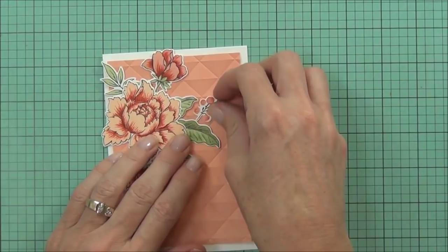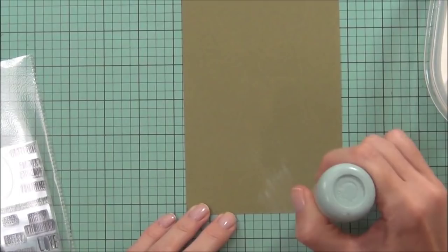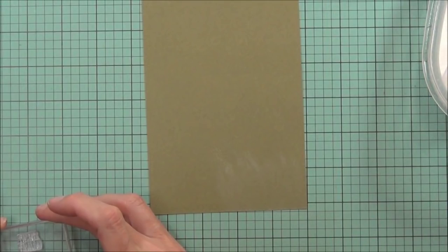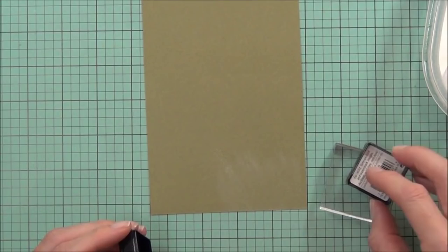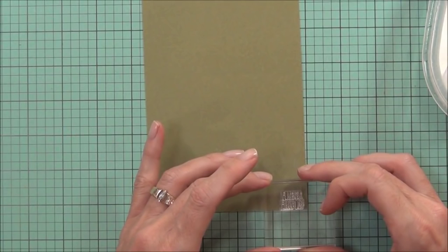Once I'm happy with the layout, I'm going to work on my sentiment. I'm white embossing one of the sentiments from the Bottle Full Of set. I just love the font in this set—it's so much fun.